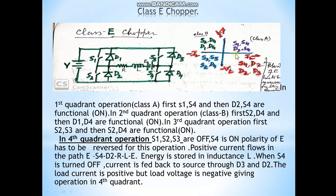For Class A (first quadrant) operation, switches S1 and S4 are on, current flows in the positive direction so load current is positive and load voltage is positive. During inductor discharging, the path is through D2 and S4, so load current remains positive.